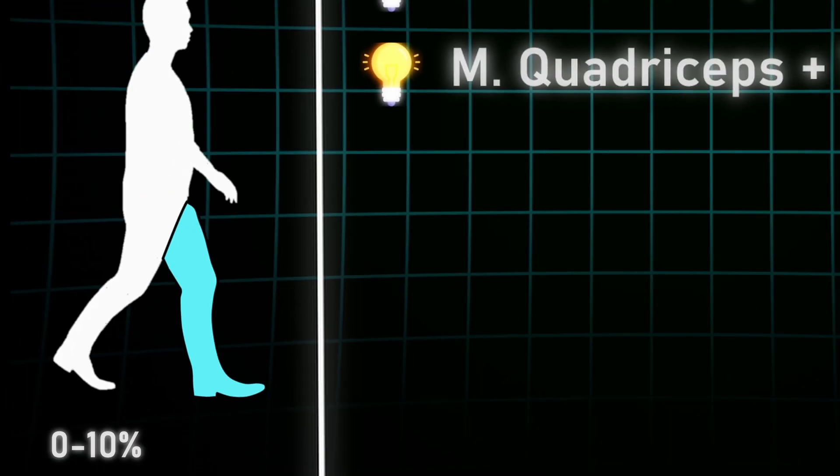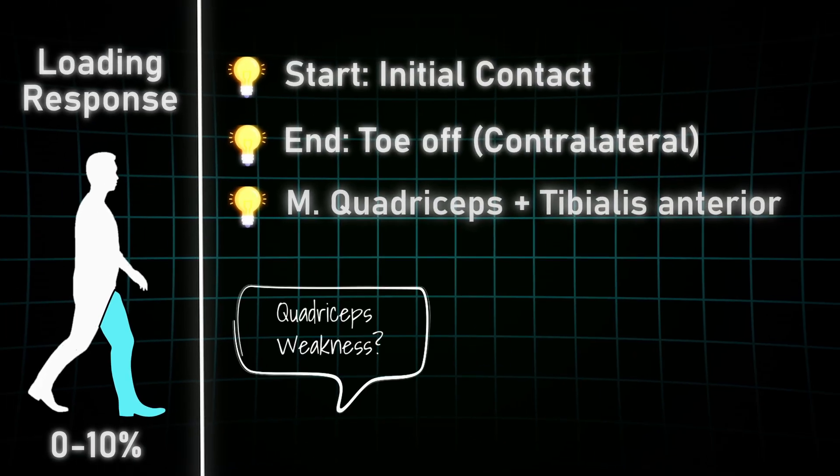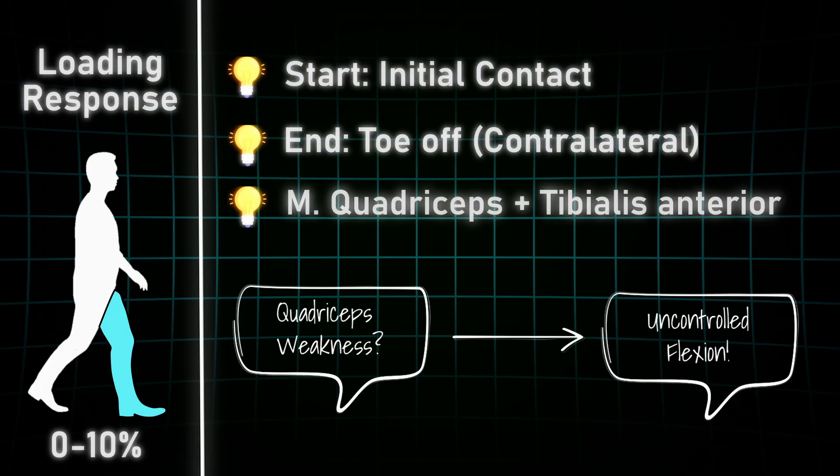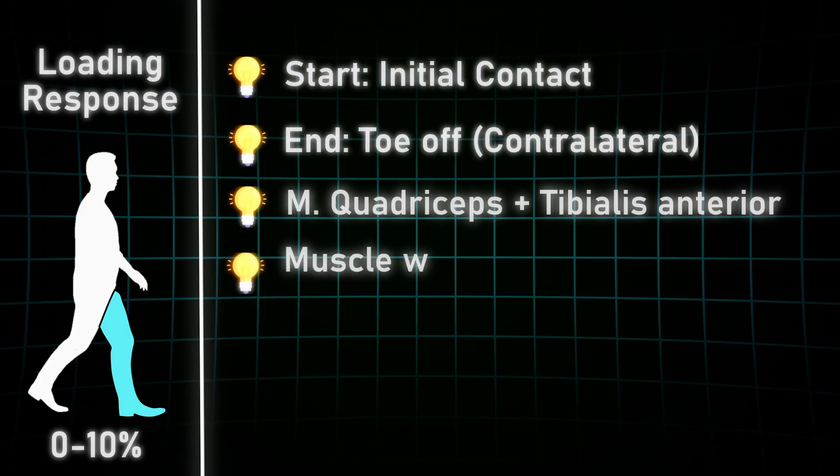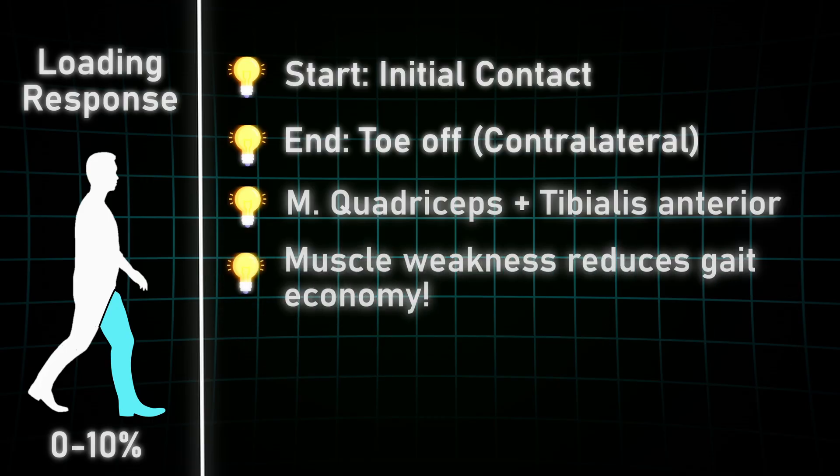What happens if a patient has a weakness in the quadriceps muscle in this gait phase? The knee would flex uncontrollably and the patient would fall. So they avoid the stance phase flexion completely and in the case of the foot, show a sudden plantar flexion like a slapping motion, which you can hear every time the foot hits the ground. This reduces gait economy and quality.